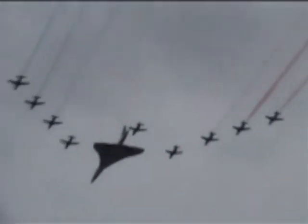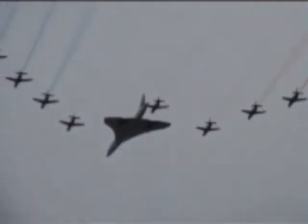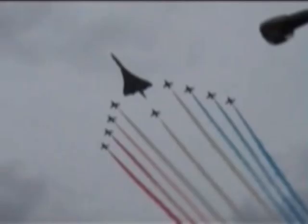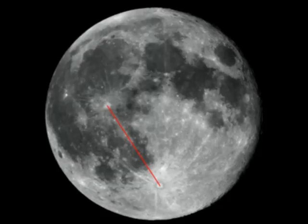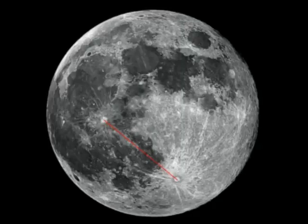Now let's take a look at our photos. We can see that the angle that the aircraft are pointing in our photographs is quite different in each photo. And in exactly the same way, we will see that the moon appears to change its angle as it travels across the sky.